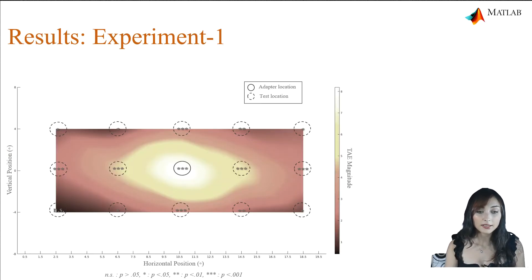Here, this graph shows the results of experiment 1 as a heat map. The colors represent the tilt-after-effect magnitude and lighter colors indicate higher tilt-after-effect magnitude. The circles show the test locations in a visual hemifield, and the stars located in them show their significance level. You can find the corresponding p-values here. As you see, we found significant tilt-after-effect magnitude for all test locations across visual hemifield except this one location.